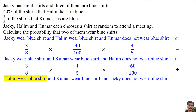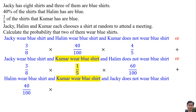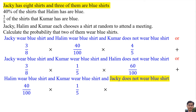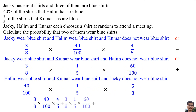The probability of Halim wearing a blue shirt is 40 over 100, multiplied by the probability of Kuma wearing a blue shirt, which is 1 over 5, multiplied by the probability of Jackie NOT wearing a blue shirt. Jackie has 8 shirts and 3 are blue, so the probability of Jackie not wearing blue is 5 over 8. The final answer is 43 over 200.